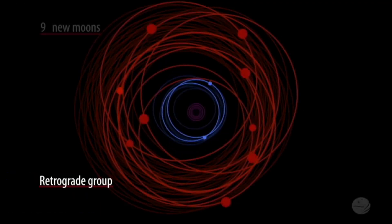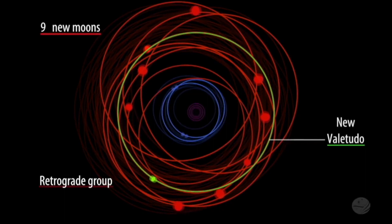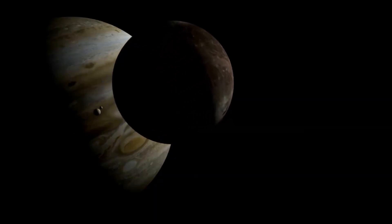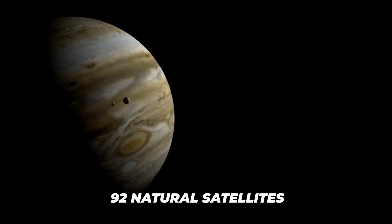Interestingly enough, 12 new moons have been discovered on Jupiter, which means the planet currently has 92 natural satellites.